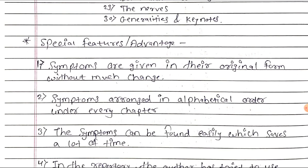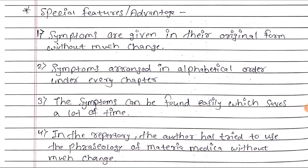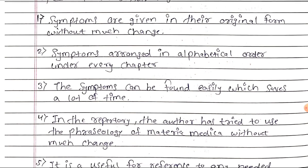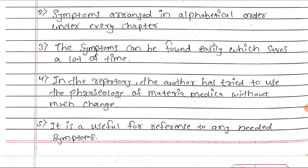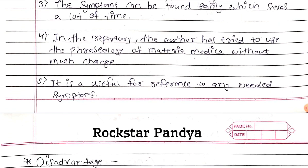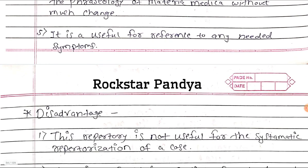Special features and advantages: symptoms are given in their original form without much change. Symptoms are arranged in alphabetical order under every chapter, so they can be found easily which saves a lot of time. The author has tried to use the phraseology of Materia Medica without much change, and it is useful for reference to any needed symptoms.